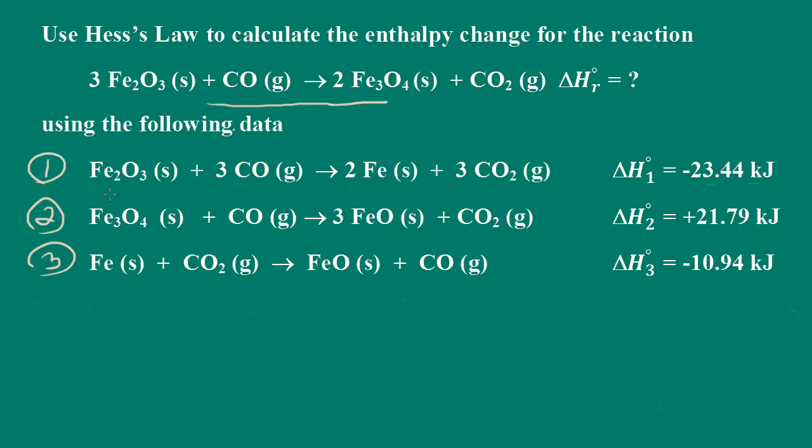So what we can do is, for example, I can multiply equation 1 through by 2. If I do that, I also have to multiply delta H by 2. I might need to reverse equation 1. If I do that, I have to change the sign of delta H. So let's go through the problem and you'll see how this works.